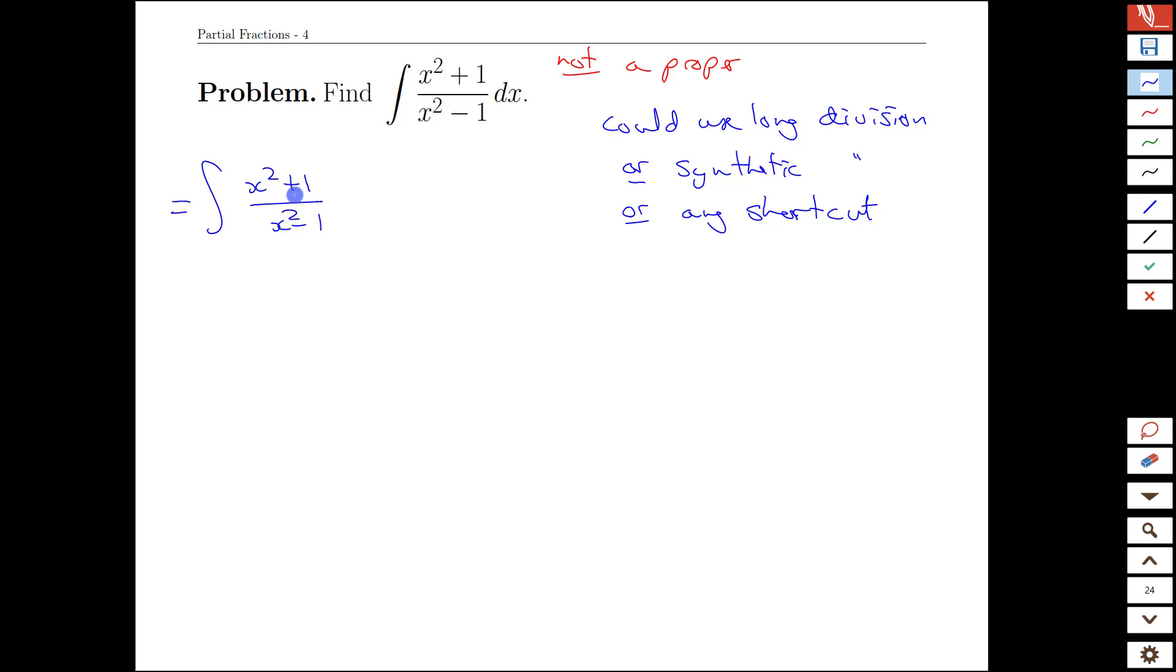Of course, we can't unless they are actually the same, but we can make them the same by subtracting two from this. Then we'd have x squared minus one. Of course, we can't just go around willy-nilly subtracting things. We have to also add the matching element. But this is exactly the same expression that we started with.